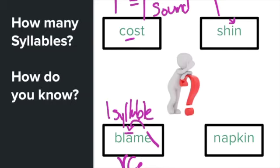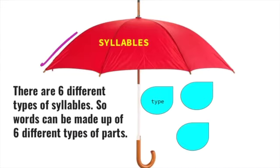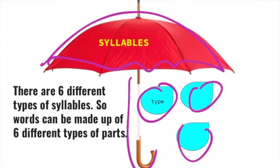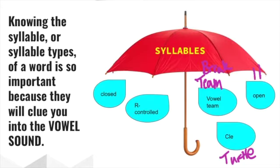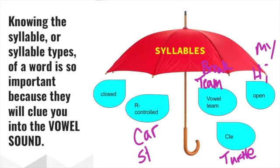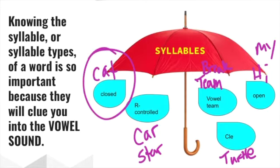'Napkin' — I hear two vowel sounds, nap-kin, so it is a two syllable word. Remember there are six types of syllables. Knowing the syllable type — closed, R-controlled, vowel team, consonant-LE like in 'turtle', open like 'hi' or 'my', and VCE — is so important because the syllable type gives you a clue as to what the vowel sound will do. Will it be long, short, or irregular?